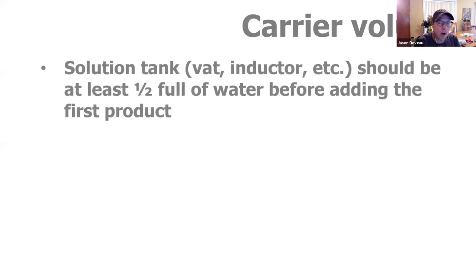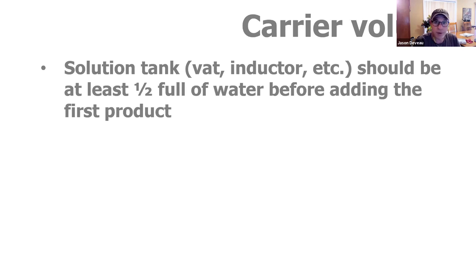Rule of thumb: if you're spraying with water, you want that tank at least half full of water before you add the very first product, and you want the agitation on. Some people say three-quarters full for water. We've demonstrated that faster fill times are one of the best ways to improve your work rate — it's not driving faster. You're probably spraying only 50% of the time your tractor's running; the other 50% you're traveling, filling, turning at row ends, or doing something other than actually spraying. So if you get an inductor or a nurse truck with a three-inch line to fill in four minutes, make sure your tank is half full of water before the first product goes in.